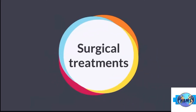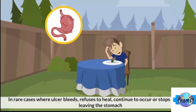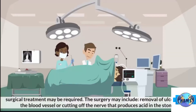In rare cases where the ulcer bleeds, refuses to heal, continues to recur, or stops food from leaving the stomach, surgical treatment may be required. The surgery may include removal of the ulcer, tying off the blood vessel, or cutting off the nerve that produces acid in the stomach.